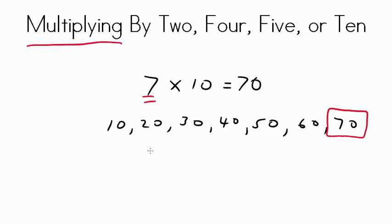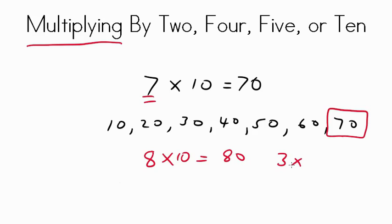For instance, if it was 8 times 10, it would be 80. And 3 times 10 equals 30. It's a neat little trick with multiplying by 10s.